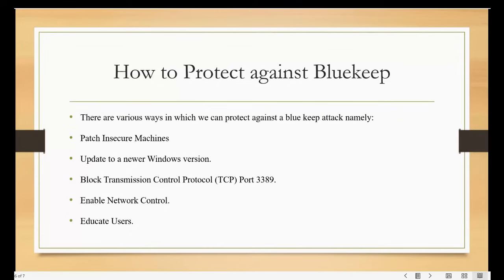There are various ways to protect against the BlueKeep attack. We have: patching insecure machines, updating to a newer Windows version, blocking Transmission Control Protocol (TCP) on port 3389, enabling network level authentication, and educating users.